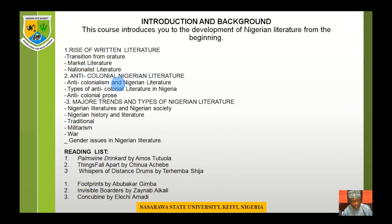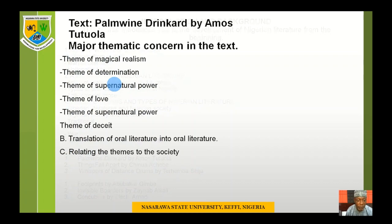Now we are going to look at the reading lists. One, we have Pamoyne Dreamcart by Amos Chuchula. We are going to look at Things Fall Apart by Chinua Achebe, Whispers of Distant Drums by Tehemba Shija, Hope in Anarchy by Kyuka Lilimjok, Footprints by Abu Bakari Gimba, Invisible Borders by Zainab Al-Khali, and Concubine by Elechi Ahmadi.